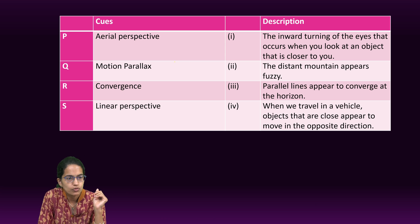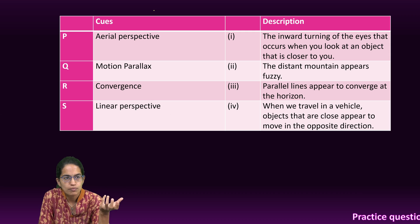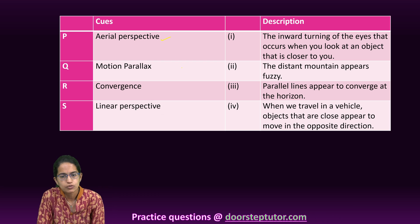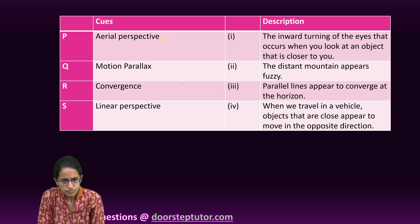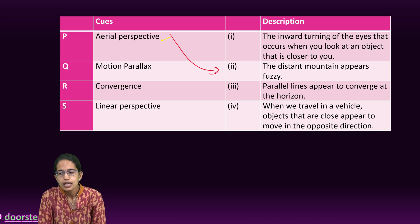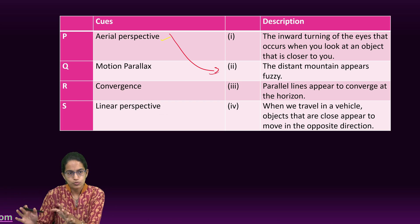Similarly, we have another match the following question and this is from our section on perception and sensation. Very, very direct question. What happens in an aerial perspective? In an aerial perspective, we see that distant objects appear hazy and the close by objects appear much more clearer.